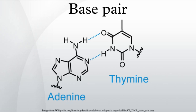The only other purine-pyrimidine pairings would be AC, GT, and UA. These pairings are mismatches because the pattern of hydrogen donors and acceptors do not correspond. The GU pairing, with two hydrogen bonds, does occur fairly often in RNA. Paired DNA and RNA molecules are comparatively stable at room temperature, but the two nucleotide strands will separate above a melting point that is determined by the length of the molecules, the extent of mis-pairing, and the GC content.